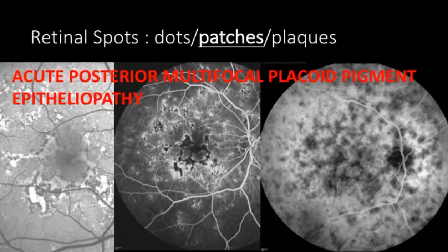Some patients with retinal spots may present with patches: this patient presented with patches of hyper-autofluorescence in the acute phase that were associated with patches of hypofluorescence on ICG. This is a case of a placoid disease, such as AMPPE.